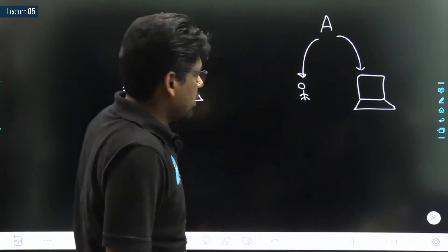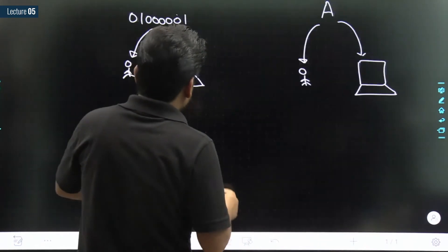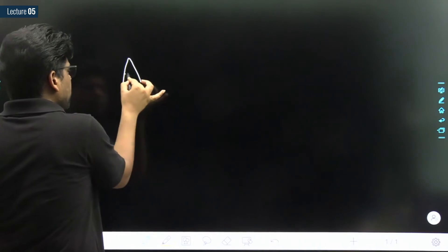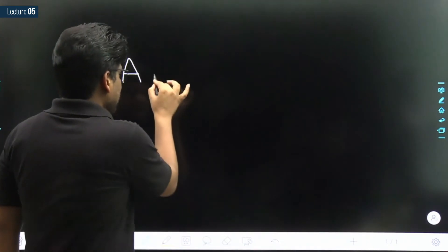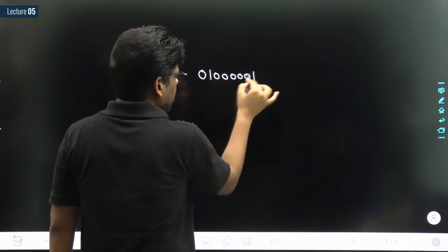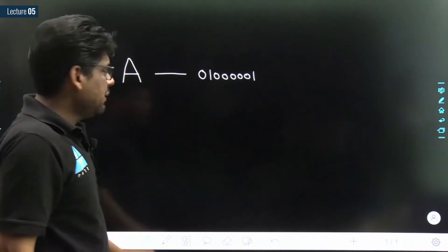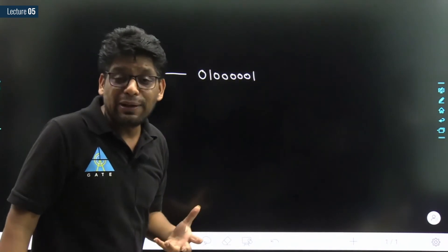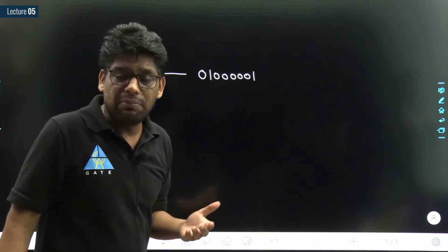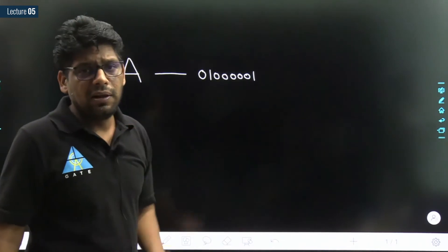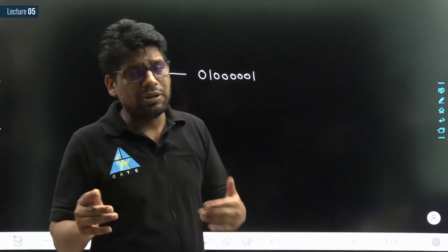Somehow, if we are pressing any symbol from the keyboard — like 'A' — for a machine it is nothing but some particular sequence of 0s and 1s. That means every symbol on the keyboard must have a binary code. Just like the decimal number system, we have a binary number system. For a machine, everything is 0 and 1 — everything.